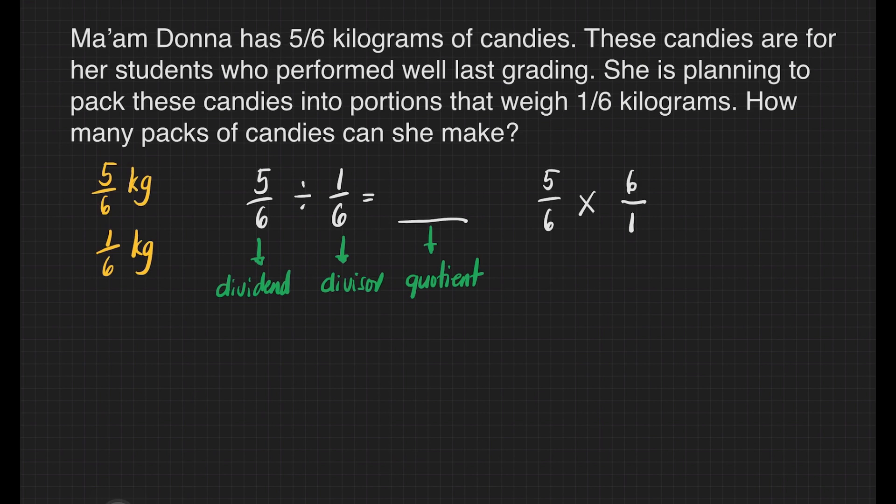If there are numbers that we can cancel, do you think we have one? Yes, we have six and another six here. We can divide it by six. Six divided by six is equal to one. Six divided by six is equal to one.